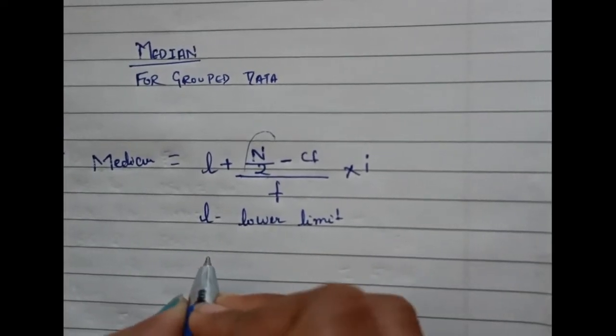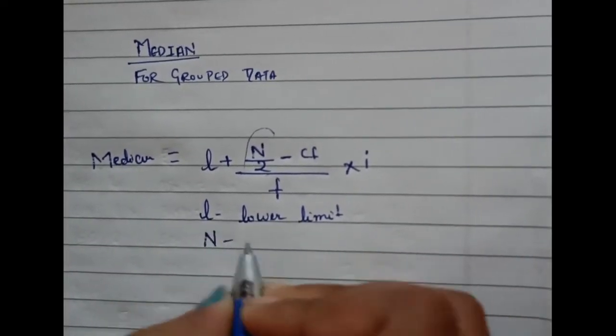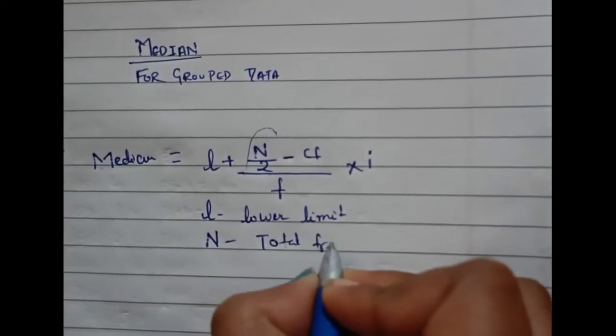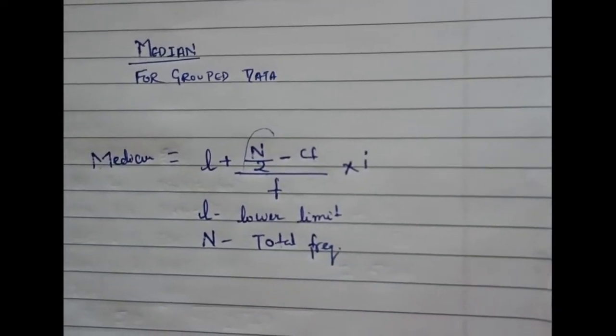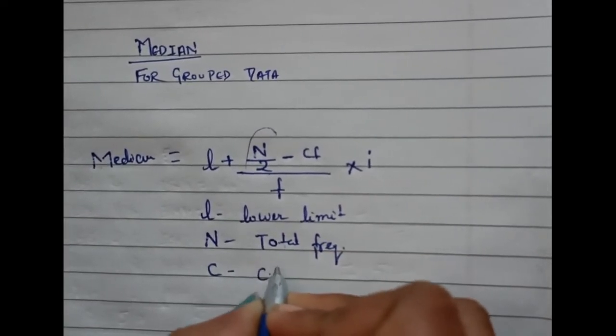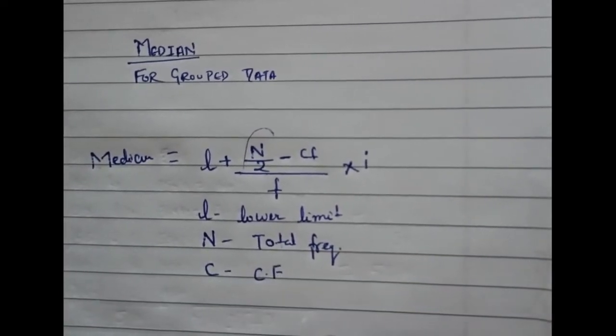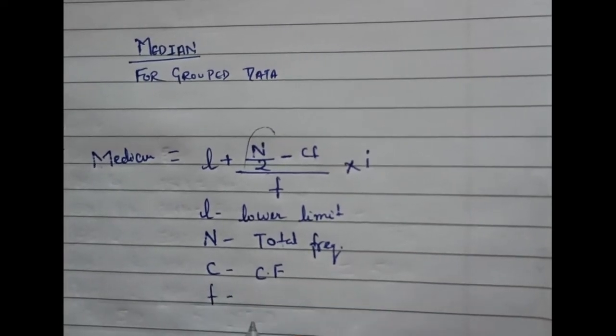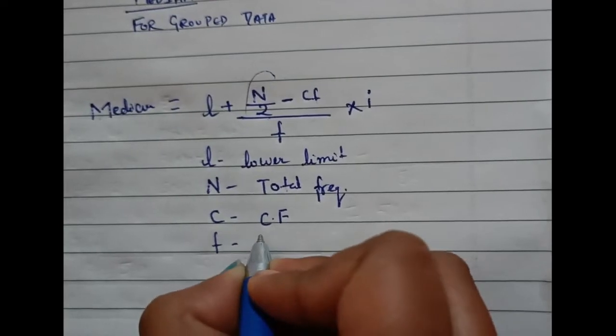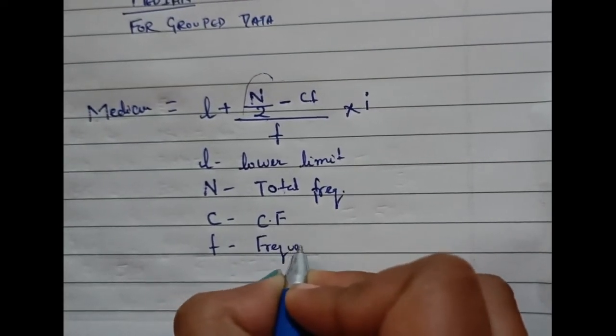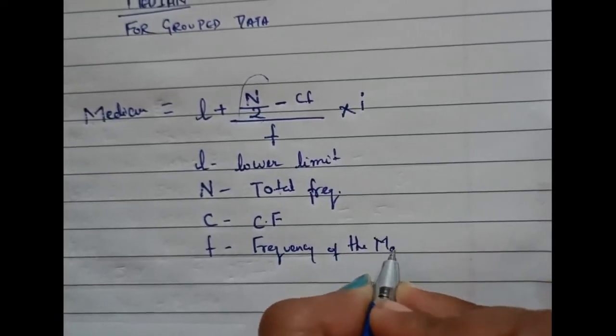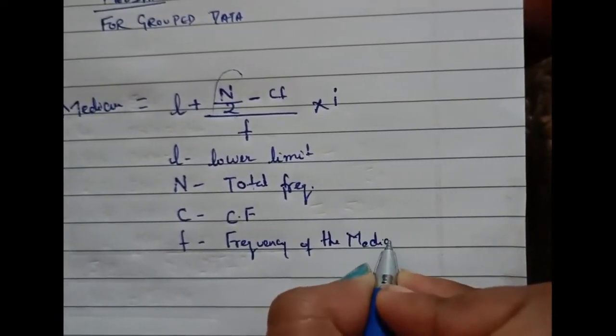Next, n is the total frequency, as I have told you earlier. Then C is the cumulative frequency. And then F, which is the frequency of the median class.